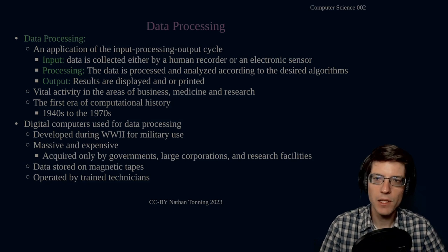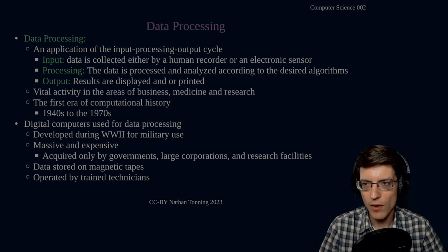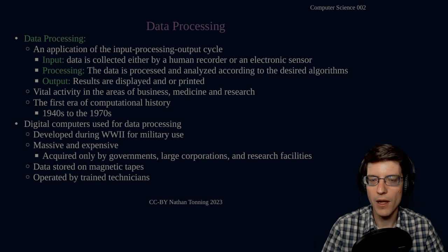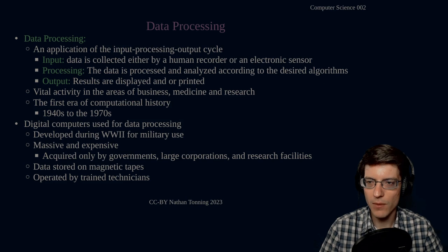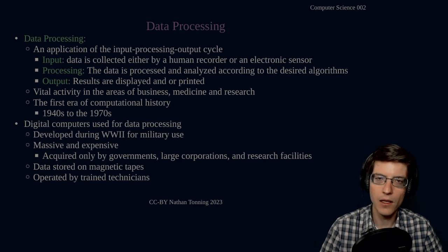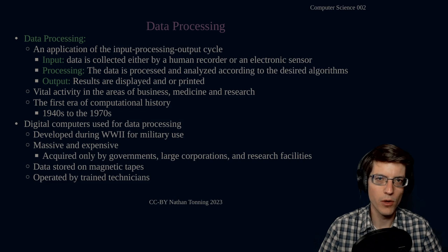Data processing is an application of the input processing output cycle. This is where data is input, either collected by a human recorder or an electronic sensor. The data is then processed and analyzed according to desired algorithms. The output is the results of the algorithm that are displayed to a screen or printed.